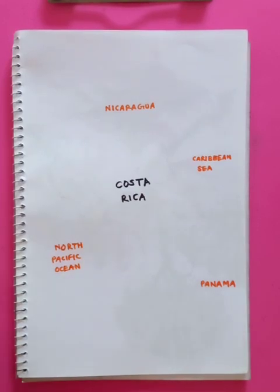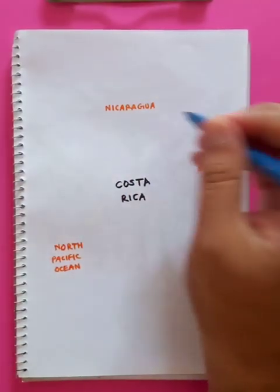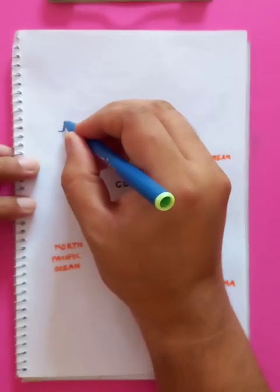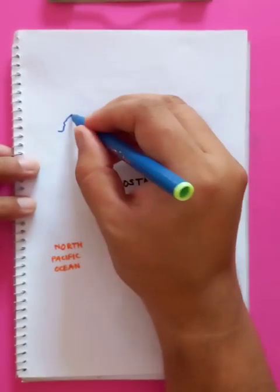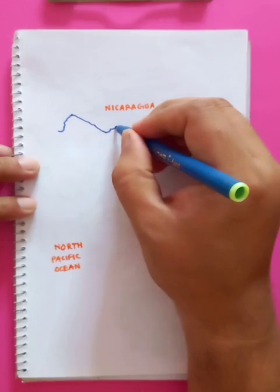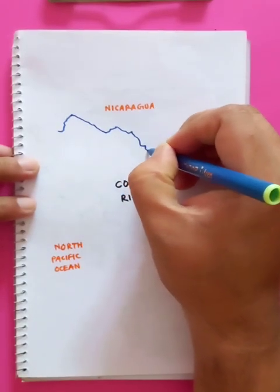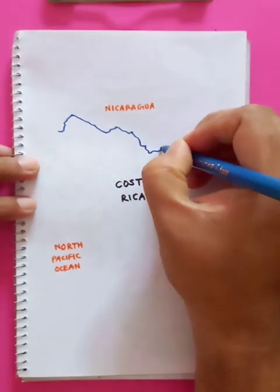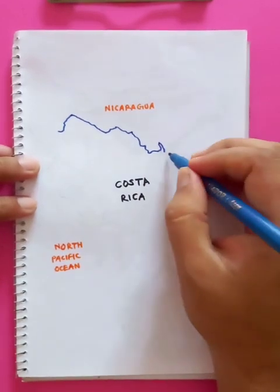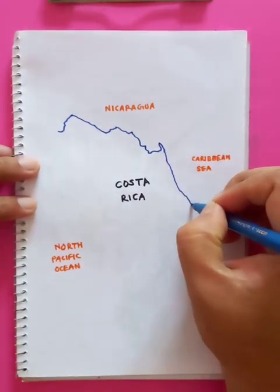So let's do the outlines of the map, then we're going to put the colors here. As you know, the outline of a map and its borders usually doesn't change. So if you want to learn this one you have to memorize it, because this is purely for academic purposes.